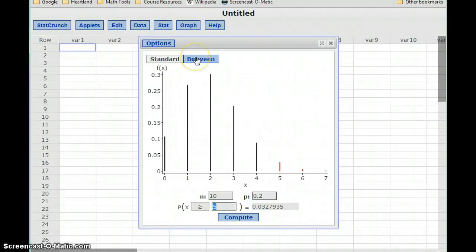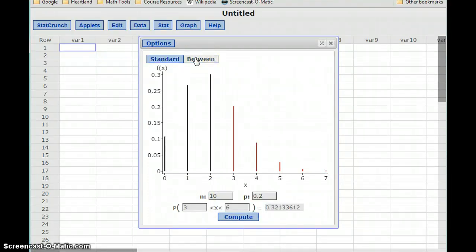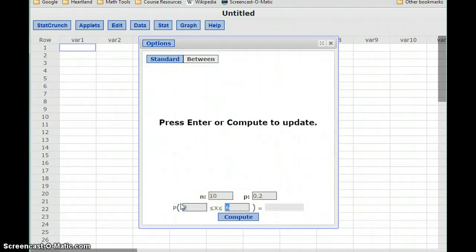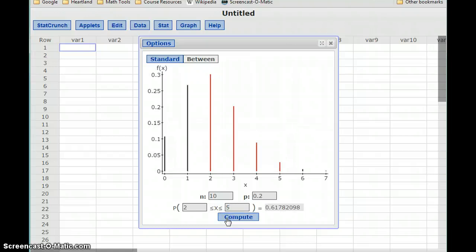Then for part C of that question, now we have a compound inequality, so we'll switch to the between option. We still have the same values for n and p, but we want X to be between 2 and 5, meaning that 2, 3, 4, or 5 would be considered a success. And we get a probability of about 62 percent, or 0.6178.